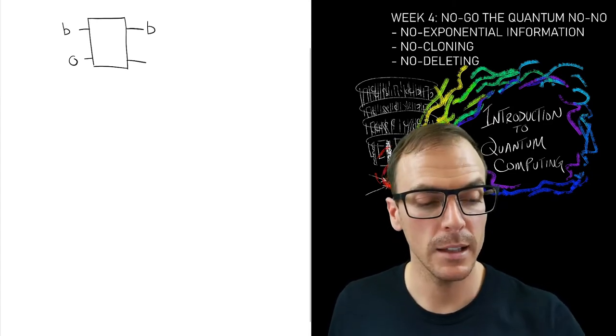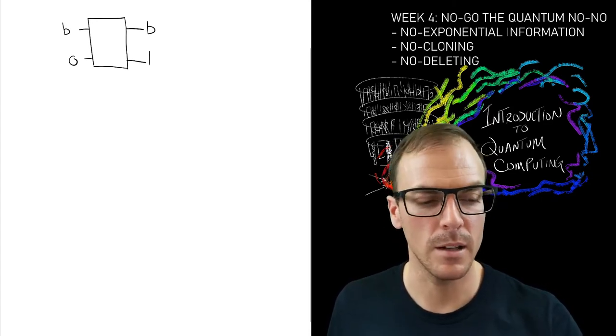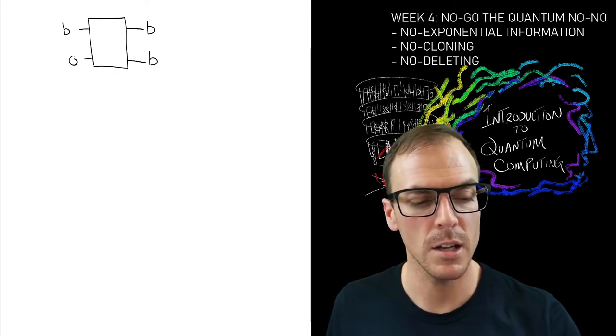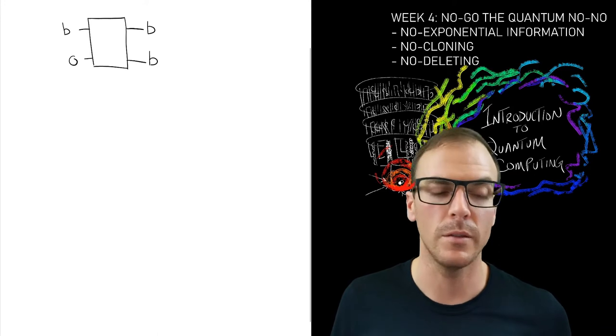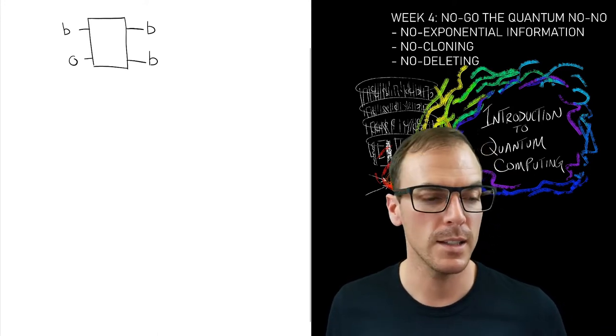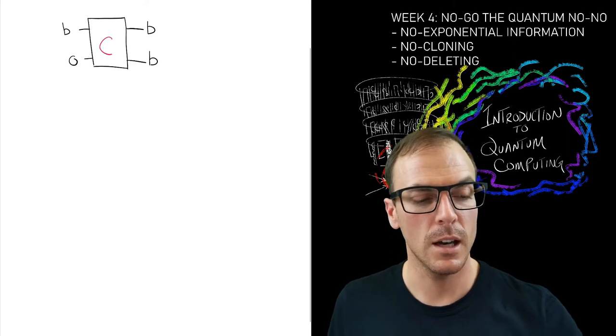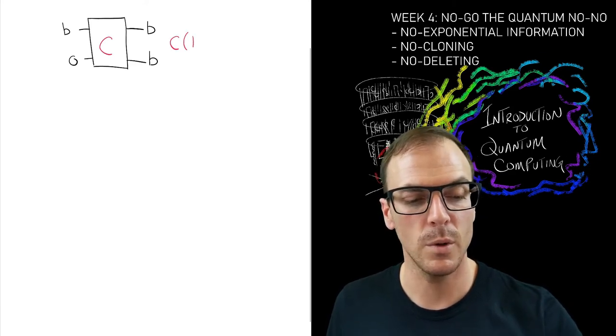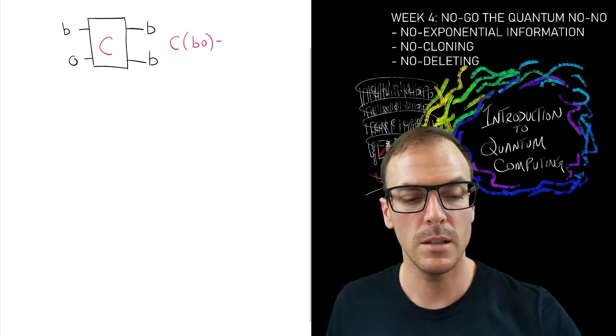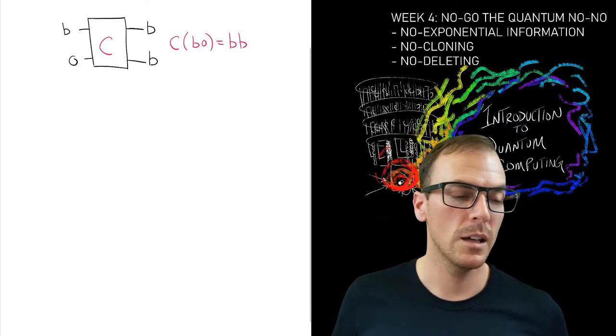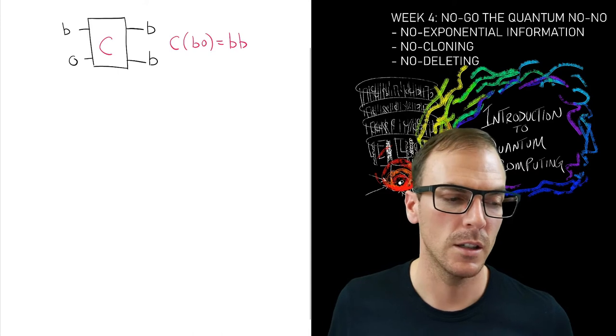What happens on the other side is that I get my original copy back, and I get a new copy of the original—an exact copy. So let's call this box C. What C does is take as input this bit string B and zero, and produces B,B.